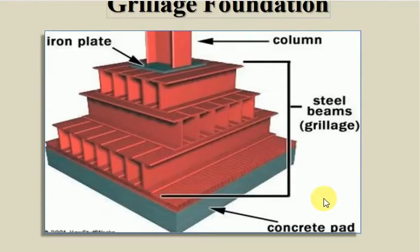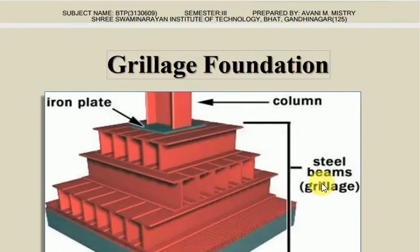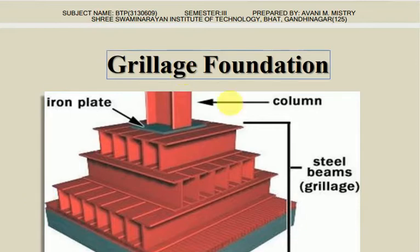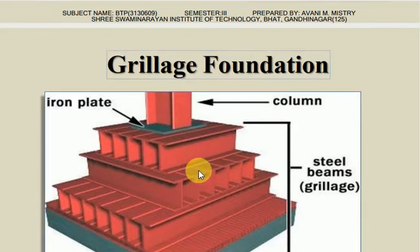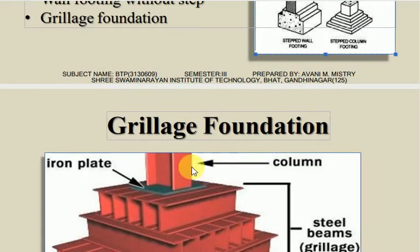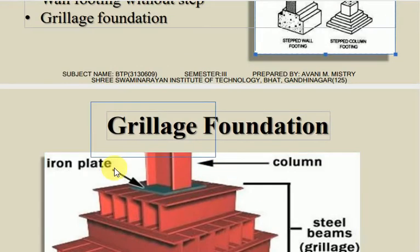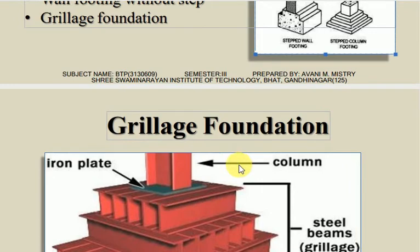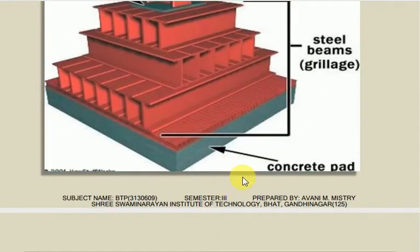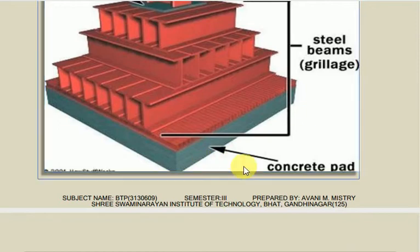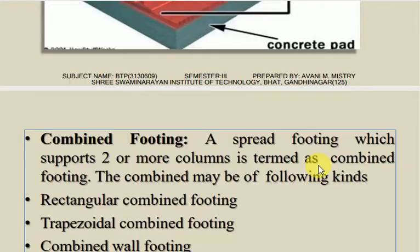The next one is grillage foundation. In grillage foundation, rolled steel joists (RS joists) are used. The lower portion is called grillage, the upper portion is called column, and both are joined with an iron plate. Below is a concrete bed.